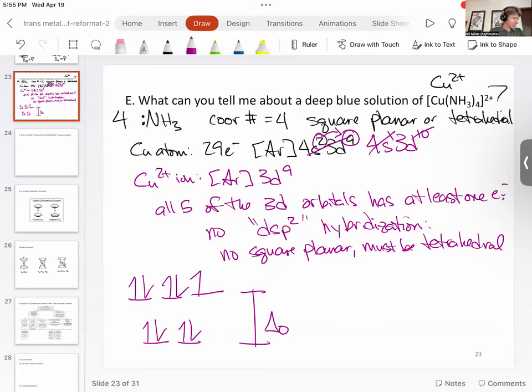But what else can we tell you here? It says in my notes ammonia is a relatively strong ligand, but tetrahedral Δ₀ is still relatively small.